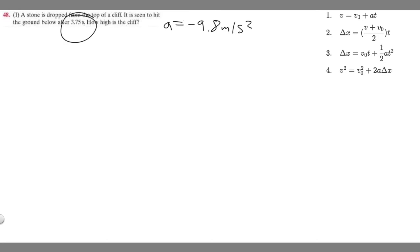Let's continue with the problem. We're also given 3.75 seconds. So we have this cliff here, stone falls, and it hits the ground below after 3.75 seconds. So the time variable is going to be 3.75 seconds.